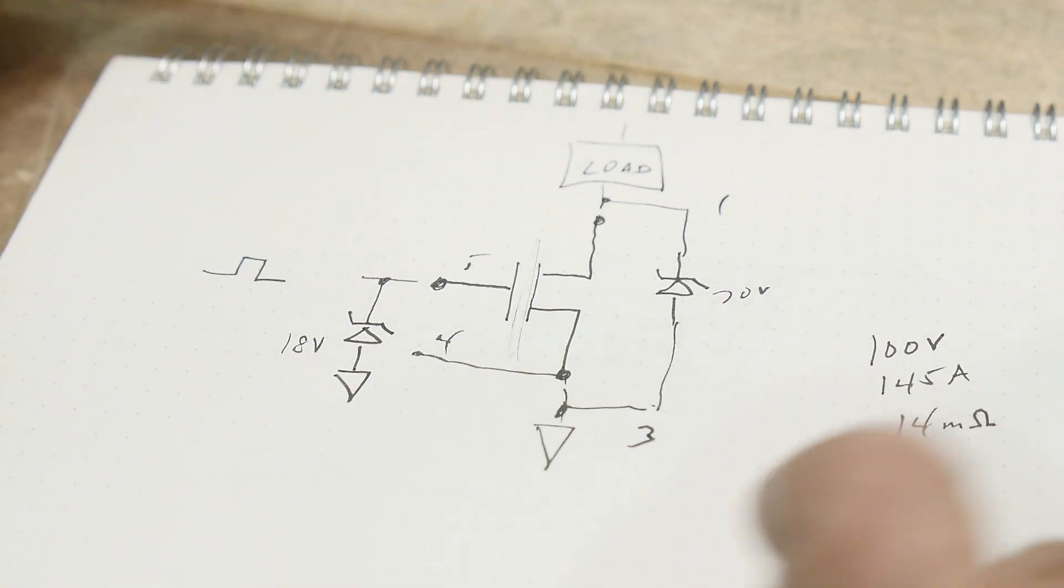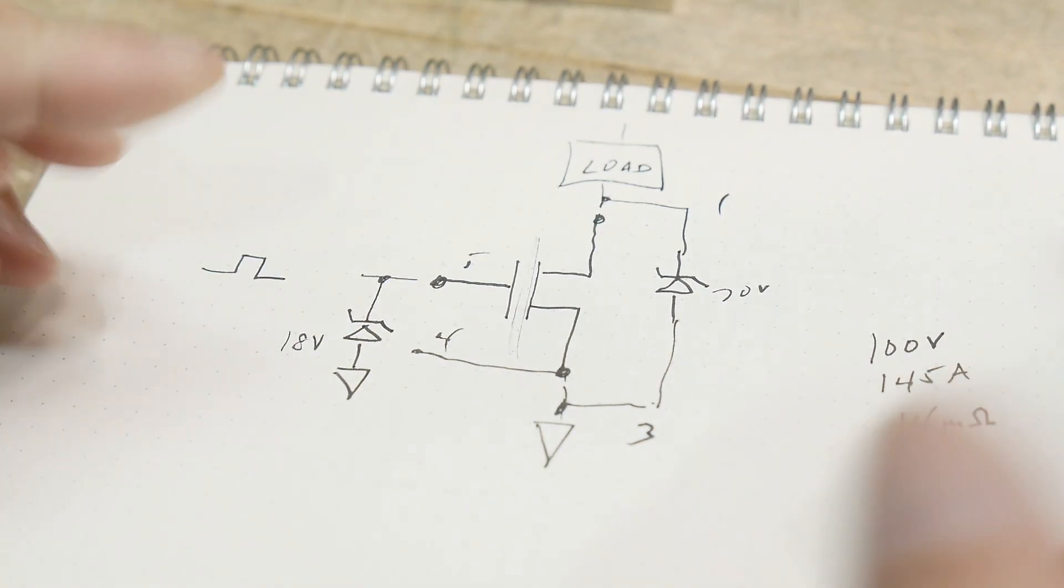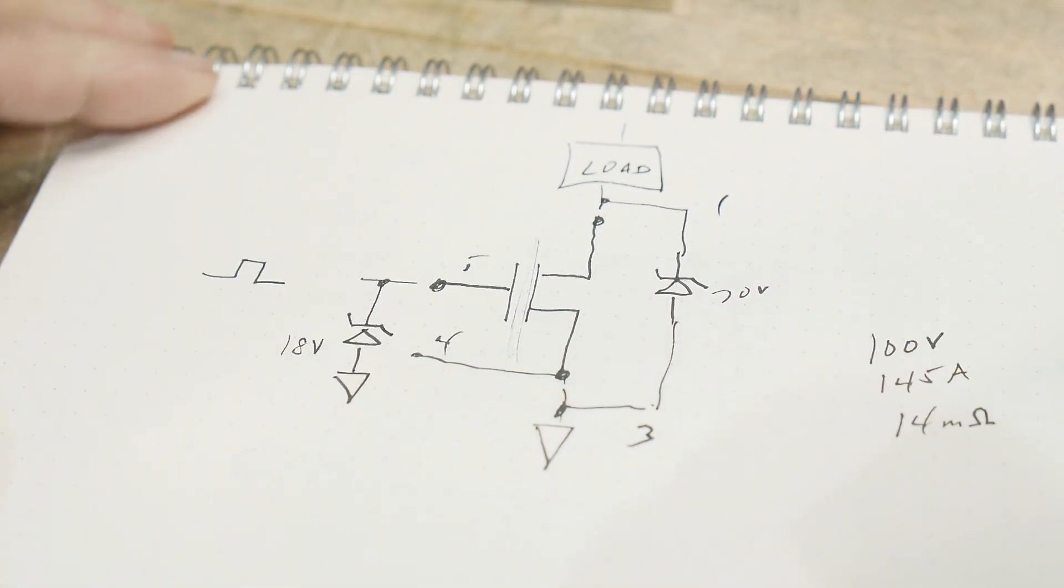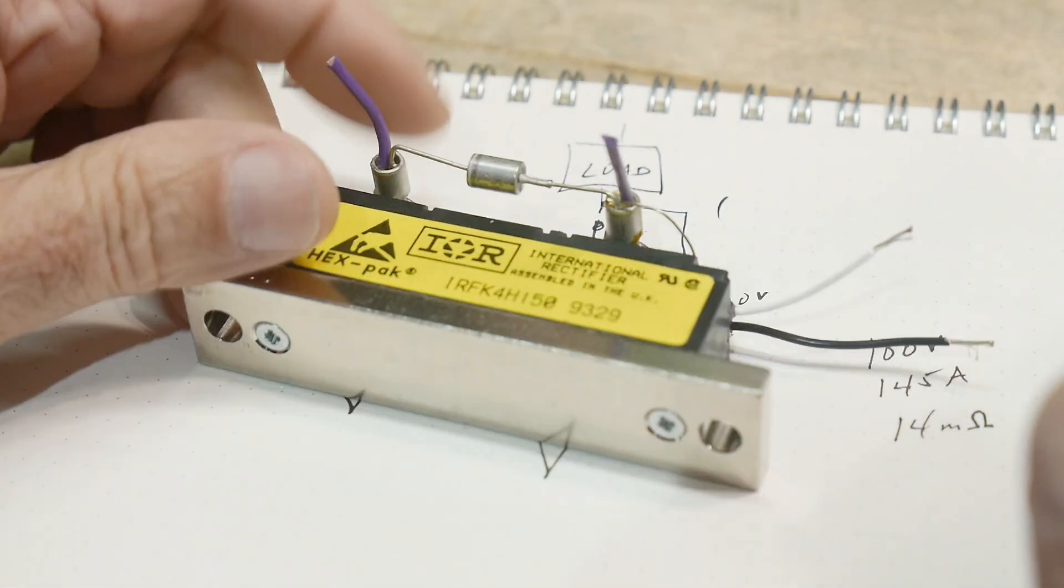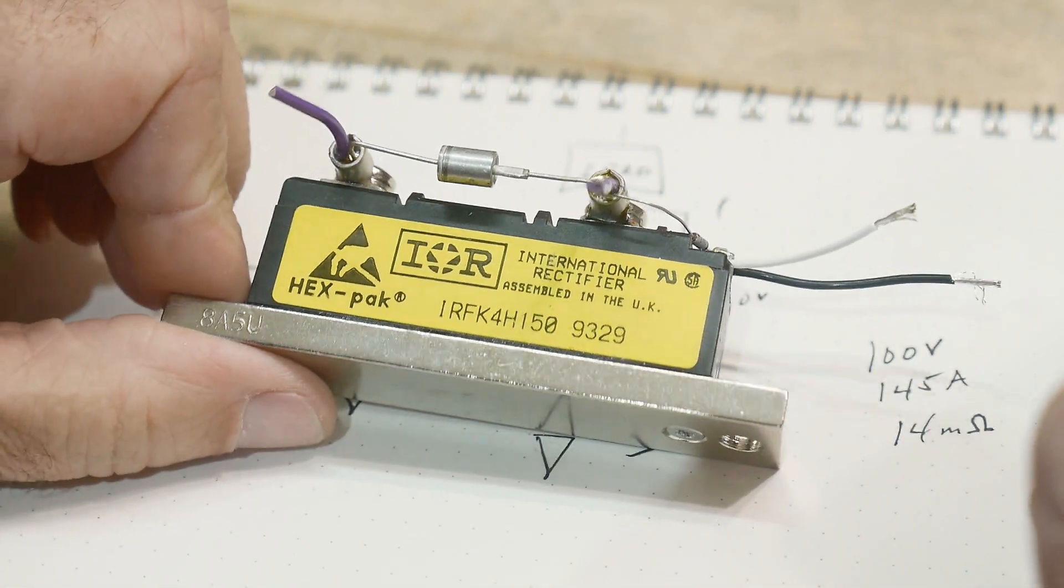I guess pin two is there. So yeah, it's kind of a weird device, but yeah. Floating gate, 150 amps, 145 amps.